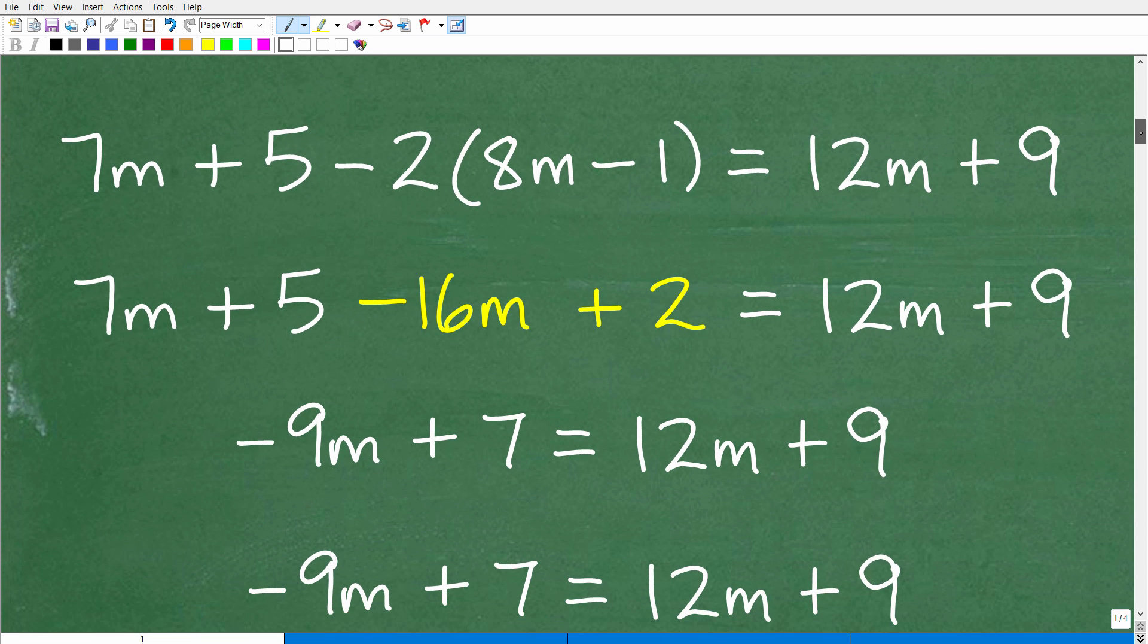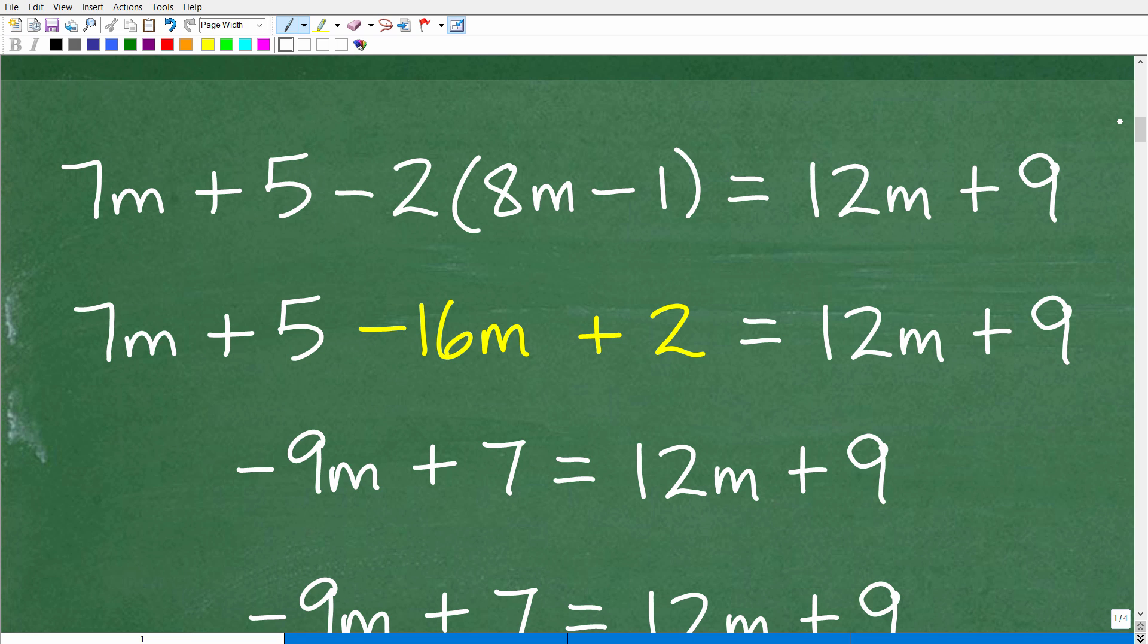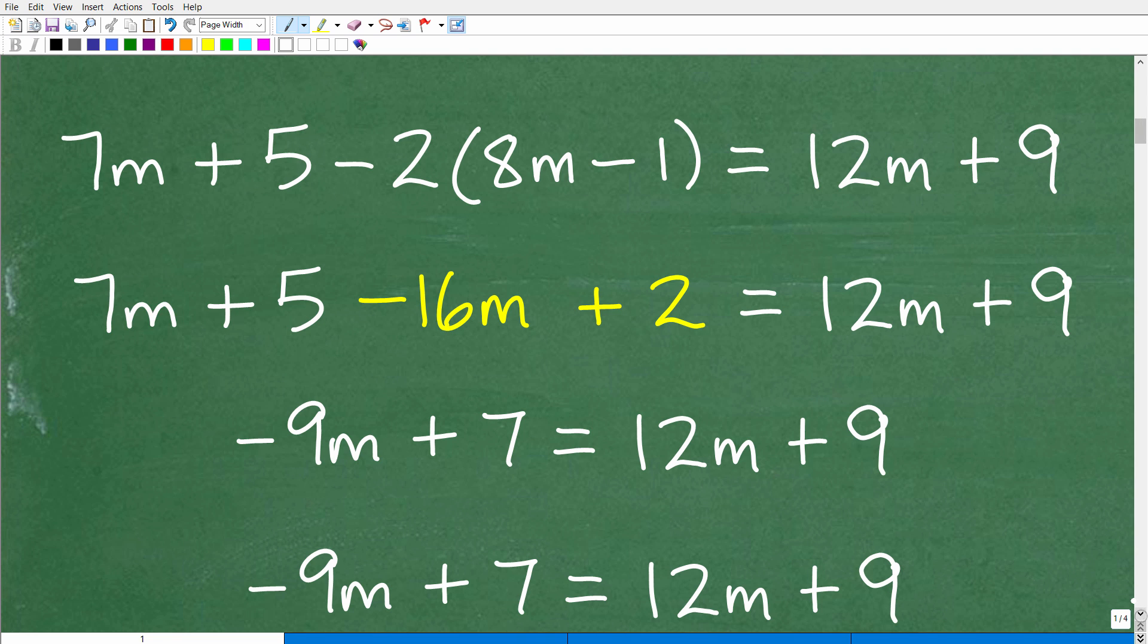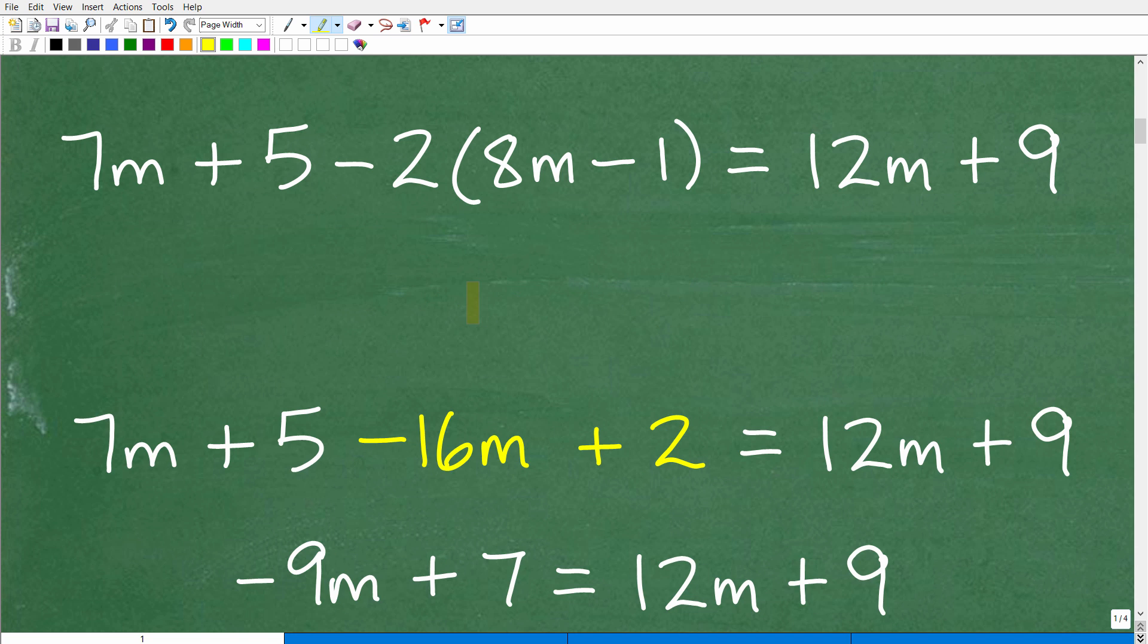But let's get into this problem right now. And here is a solution. Here's the problem. Here's a solution. We're going to walk through this one step at a time. Okay. So let's just keep our attention up here with the problem. And we have 7m plus 5 minus 2 times 8m minus 1 parentheses equals 12m plus 9.